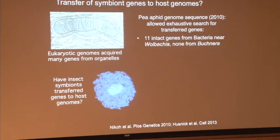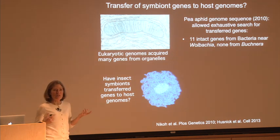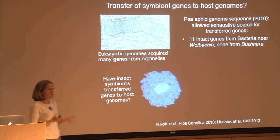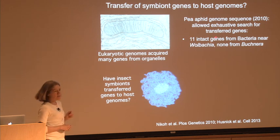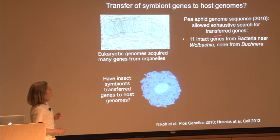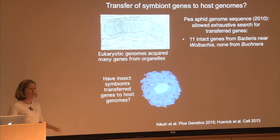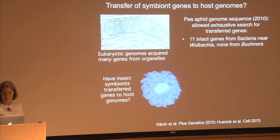The bacteriocyte is like a little factory for making amino acids, and the aphid plays its part alongside Buchnera. She mapped out how all these parts go together — one being the final step in branched-chain amino acid biosynthesis, which is very highly expressed specifically in bacteriocytes, suggesting the aphid is carrying out that step. When the pea aphid genome was sequenced in 2010, we could exhaustively search the host genome for genes from bacteria. It turned out there were some — 11 intact genes clearly from bacteria — but they seem to come from organisms close to Wolbachia rather than from Buchnera, and they're highly expressed in bacteriocytes.